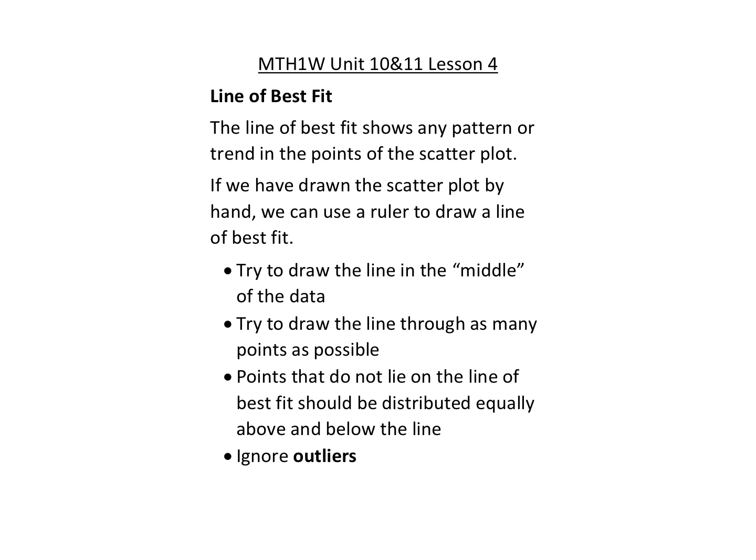Once we've decided whether there is a correlation we might want to draw a line of best fit — the line that best fits the data. We need a ruler to draw it, preferably one you can see through so you can see the points. We try to draw the line through the middle of the data, hitting as many points as possible, with remaining points divided equally above and below the line.